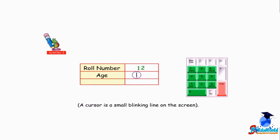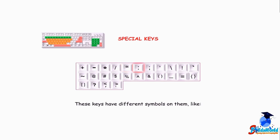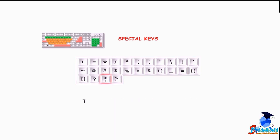A cursor is a small blinking line on the screen. Special keys have different symbols on them like: plus, minus, multiplication, forward slash, double quote, colon, semicolon, single quote, backslash, asterisk, caret, apostrophe, and at symbol.